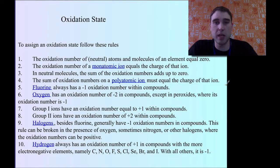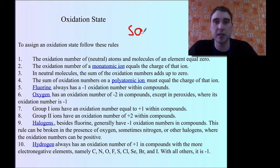If we're looking at polyatomic ions, the oxidation numbers have to equal the charge on that ion. So if we had sulfate, SO₄²⁻, the total oxidation number there would be equal to minus 2.